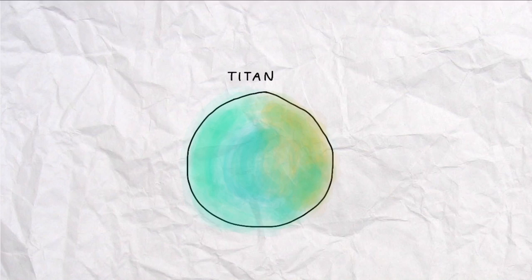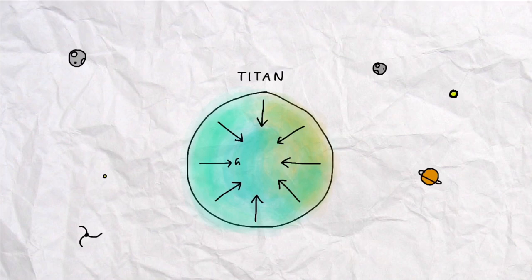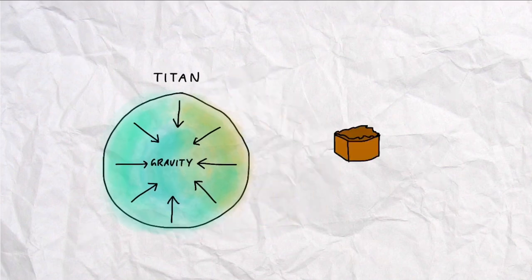Consider Titan, Saturn's largest moon. Like all celestial bodies, it's held together by its own gravitational strength, sort of like how a brownie is held together by its stickiness.